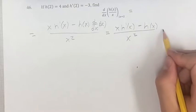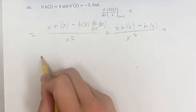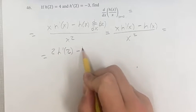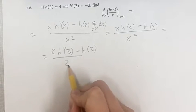This is over x squared, and now if we want to evaluate it at 2, we just have to plug in 2 everywhere. So we have 2 h prime of 2 minus h of 2 over 2 squared.